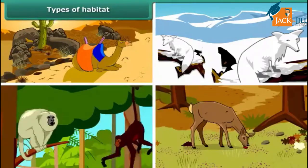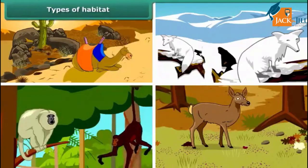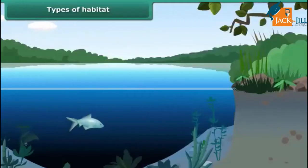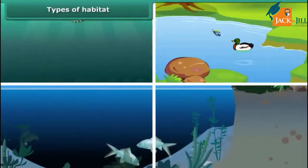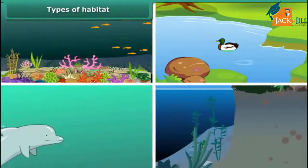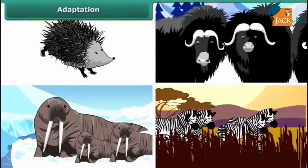Habitat of living organisms found in water is aquatic habitat. Sea, ponds, oceans, and lakes are examples of this category. Animals like porcupine, yak, and zebra have different types of physical features to survive and live in their surroundings.